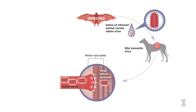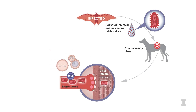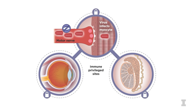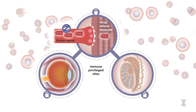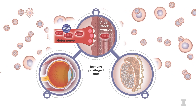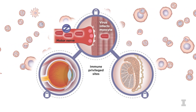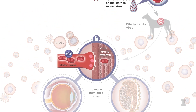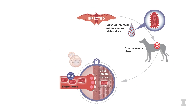Inside the nervous system, this virus is hidden from the immune system. To understand why, we need to introduce the concept of immune-privileged sites. These are locations in the body, such as the nerves, the eyes, and the testes, which limit an inflammatory response even in the presence of antigen. The purpose of this is to protect these areas from damage resultant to immune cell-antigen interaction. And in some cases, like with rabies in a neuron, the immune system doesn't know it's there.